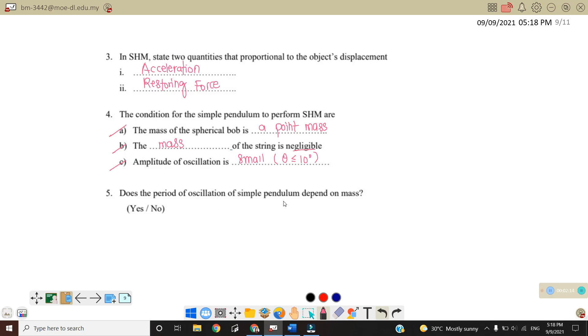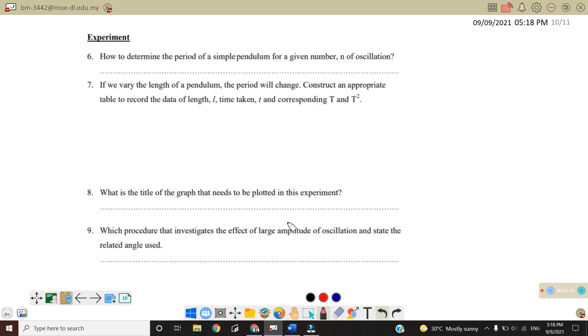Number five. Does the period of oscillations of simple pendulum depend on mass? Actually no, because our period for simple harmonic motion for simple pendulum is equal to 2π times the square root of length over G. So our period actually depends on the length. How to determine the period of the simple pendulum for a given number of oscillations? So we want to determine the period. Meaning that we need to divide the time taken by the number of oscillations. So usually period is equal to the total time over number of oscillations.